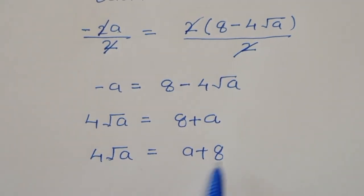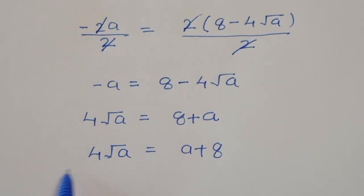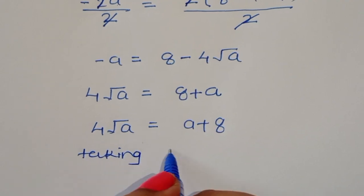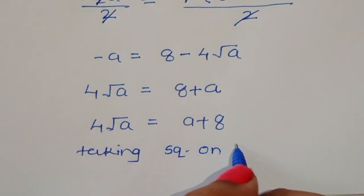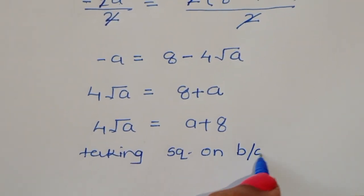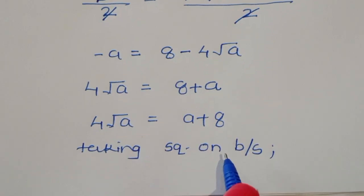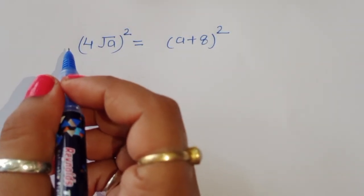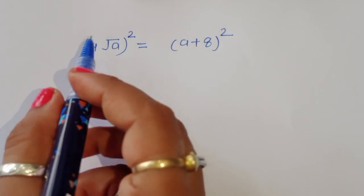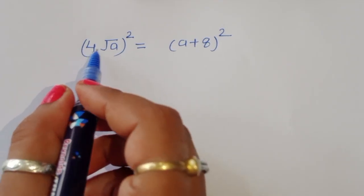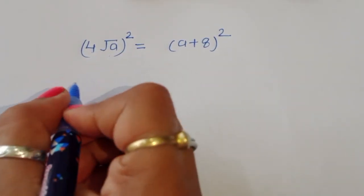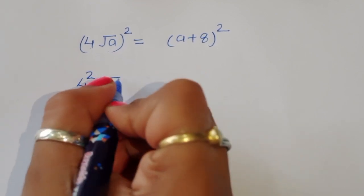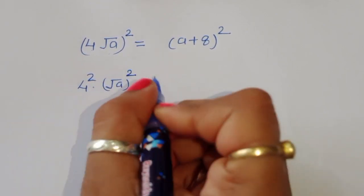Now we can take square on both sides to simplify. (4√a)² = 4² × (√a)², which gives 16a.